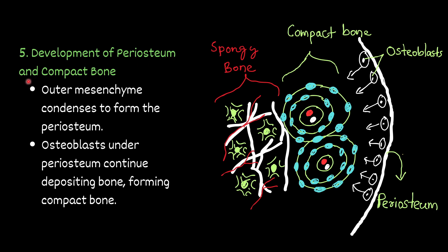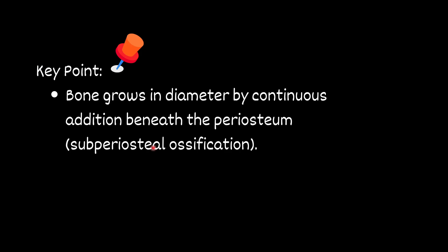Step five — development of periosteum and compact bone. The outer mesenchyme condenses to form the periosteum. Osteoblasts under the periosteum continue depositing bone, forming compact bone. On the inner side you find spongy bone, and on the outer side compact bone is deposited by osteoblast cells. Key point: bone grows in diameter by continuous addition beneath the periosteum — this is called subperiosteal ossification.